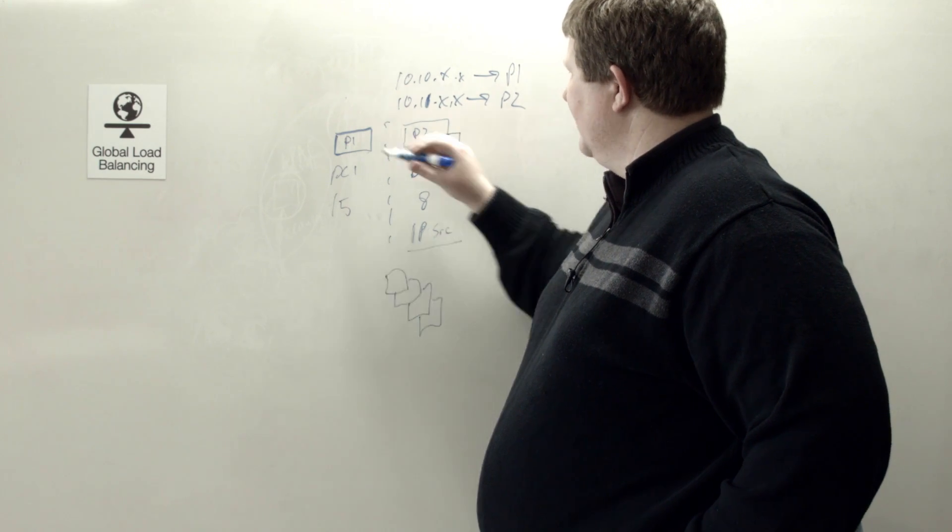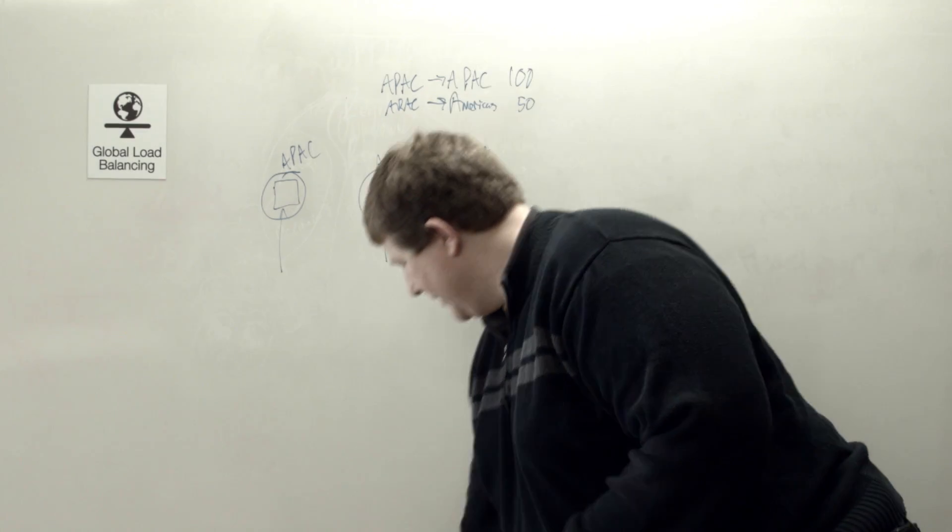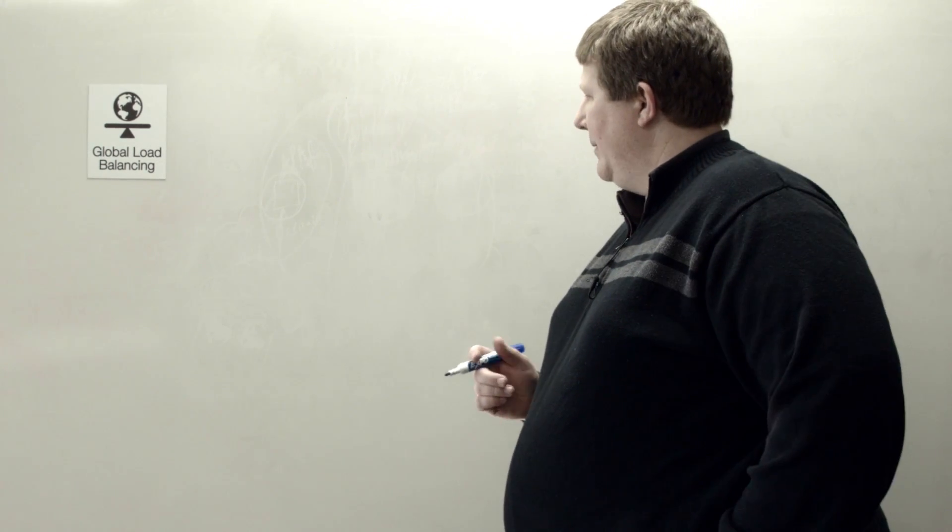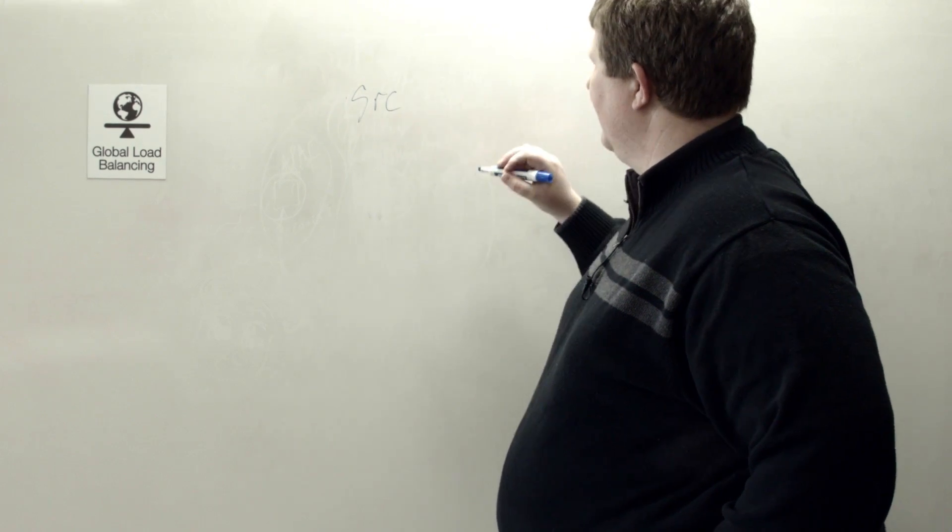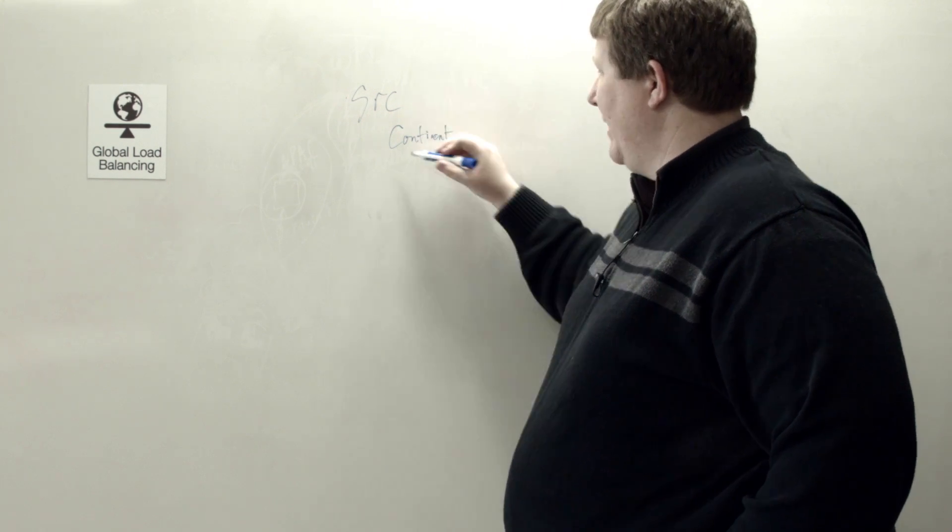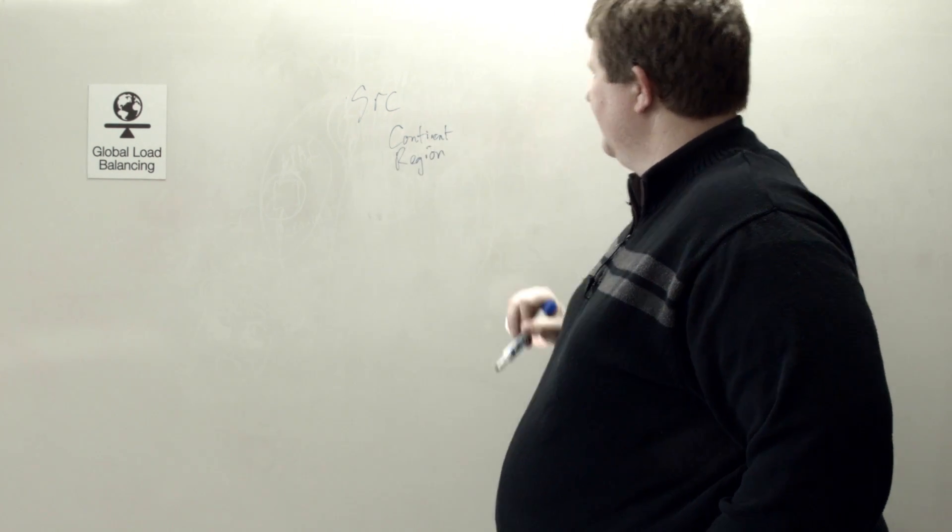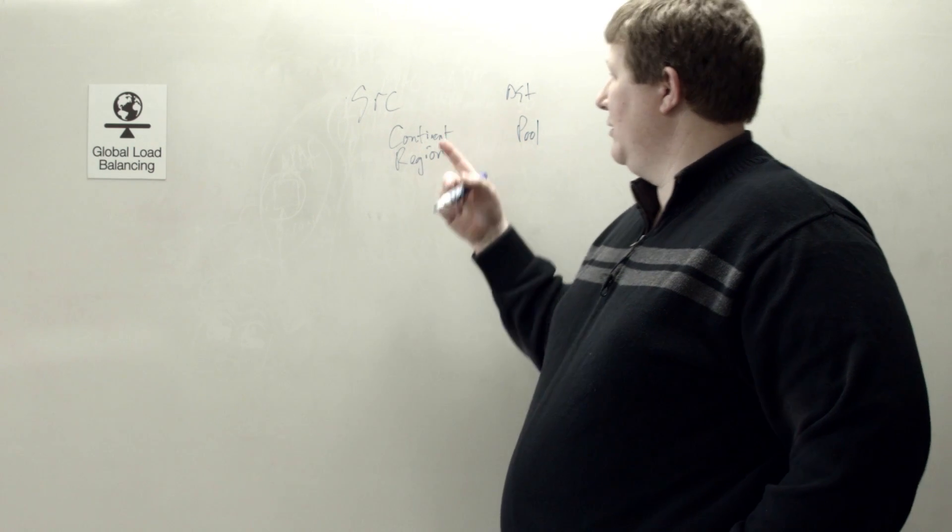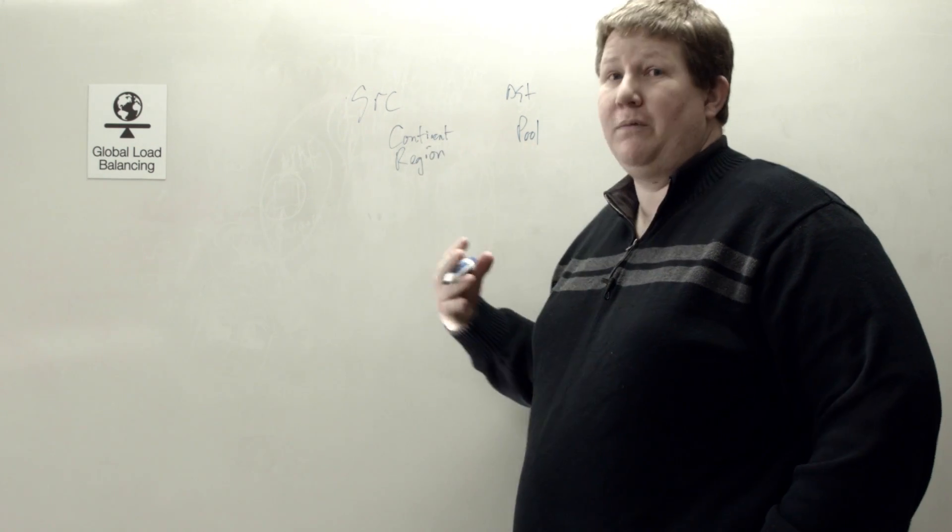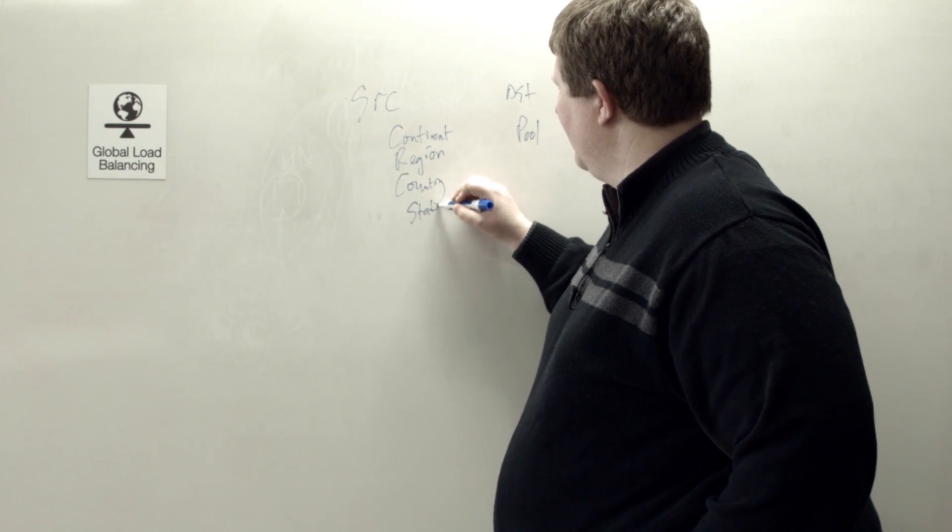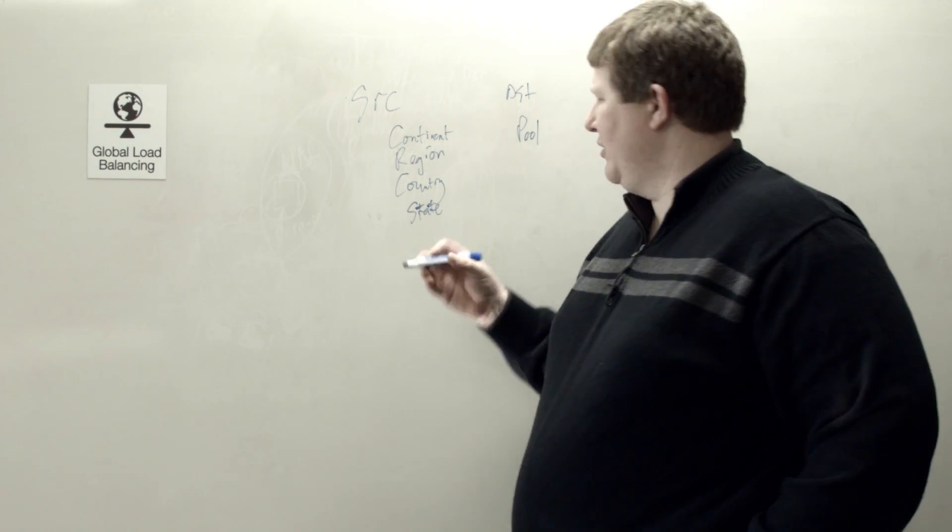And then at the pool level, we used a different load balancing algorithm altogether. So as far as the topology record itself, when you're creating it, you have multiple options to select as your source. So you have source traffic and that can be, well actually, we set what's called a region as our source. And then as our destination, we selected a pool. But there are other options. You can just skip creating the regions and you can create multiple topology records based on each continent. You can do it on country. You can even do it down to the state level.